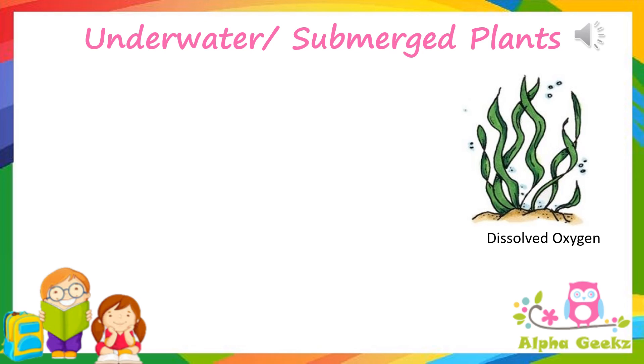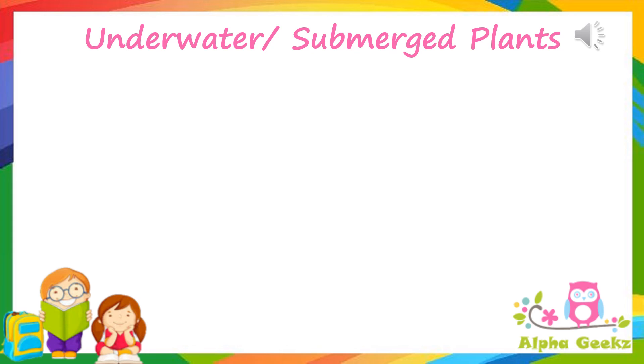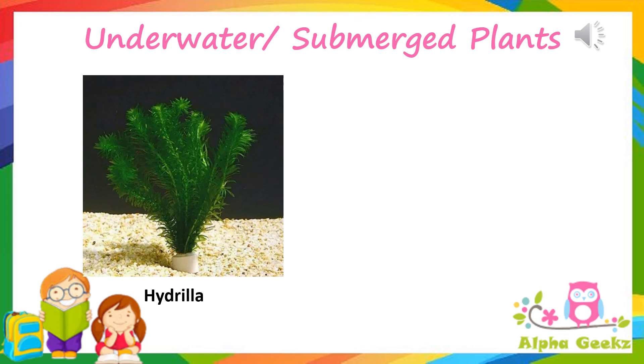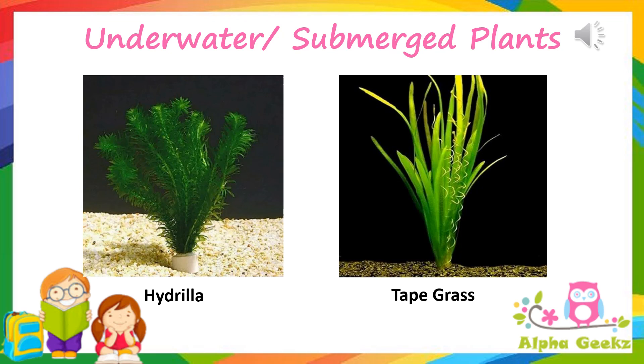Some examples of underwater plants are hydrilla, which have tiny leaves, and tape grass, whose leaves are shaped ribbon-like.